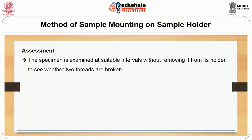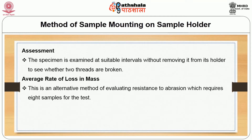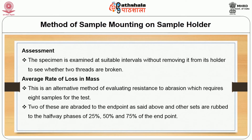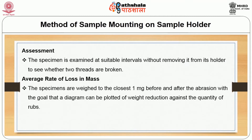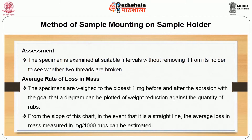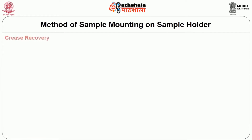Assessment: the specimen is examined at suitable intervals without removing it from its holder to check whether two threads on the woven fabric are broken. An alternative method to assess abrasion capacity is the average rate of loss in mass. This method requires 8 samples: two are abraded to the end point such as hole formation or change in weight, and the other sets are rubbed to halfway phases such as 25%, 50%, and 75% of the end point. Specimens are weighed to the closest 1 mg before and after abrasion, and a chart is plotted of reduction in weight against the number of rubs. The slope of the chart, if a straight line, gives the average loss in mass measured in mg per 1000 rubs.